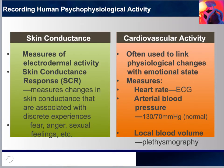Emotional thoughts and experiences are associated with increases in the ability of the skin to conduct electricity. The physiological basis of skin conductance changes is not fully understood, but there is considerable evidence implicating the sweat glands. Although the main function of sweat glands is to cool the body, these glands also tend to become active in emotional situations. Sweat glands are distributed over most of the body's surface, but those in the hands, feet, armpits, and forehead are particularly responsive to emotional stimuli.